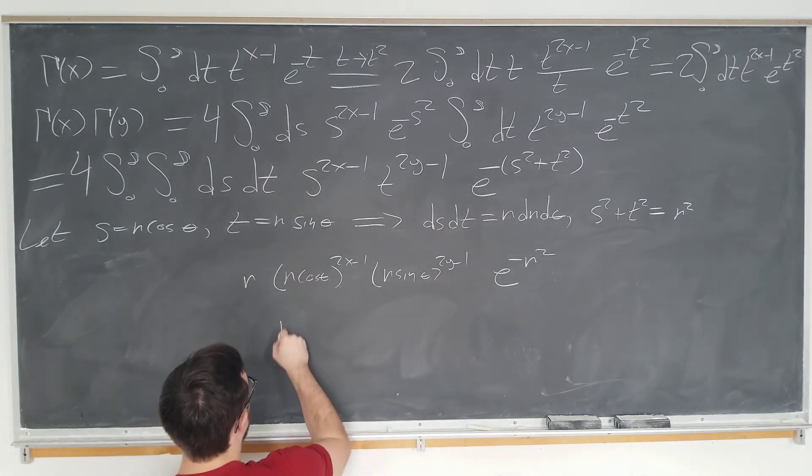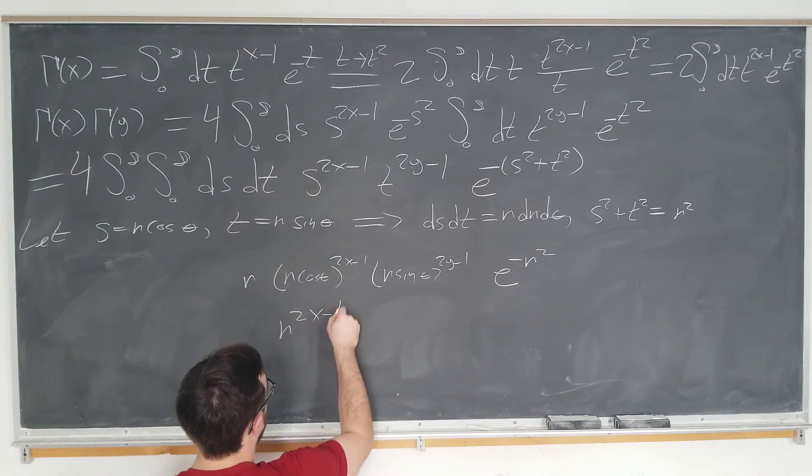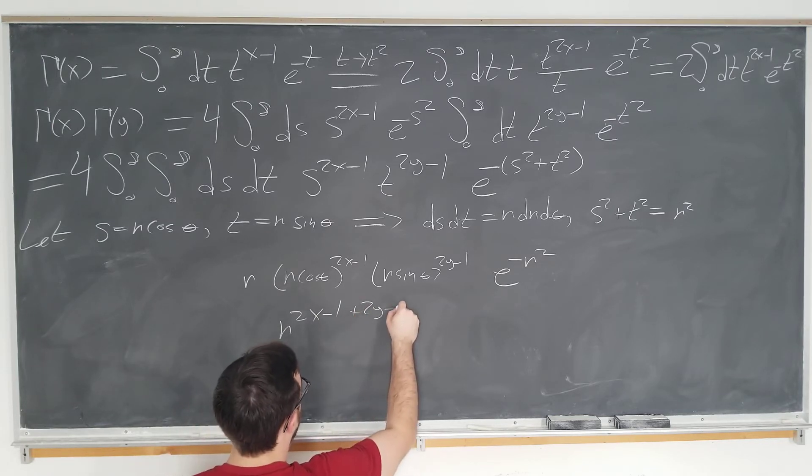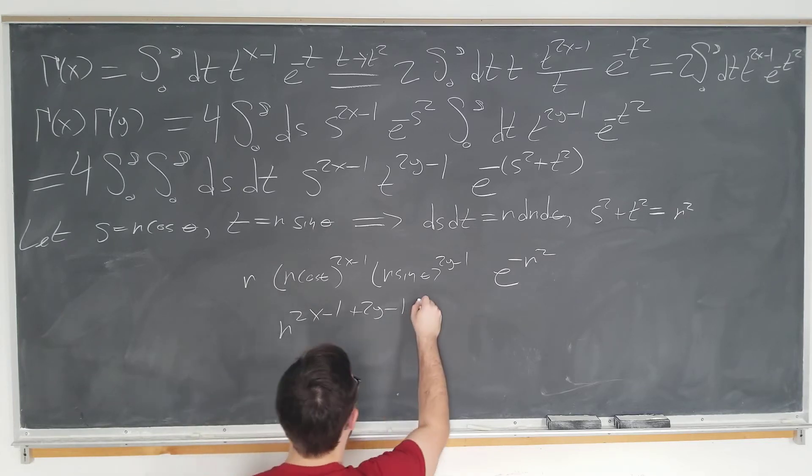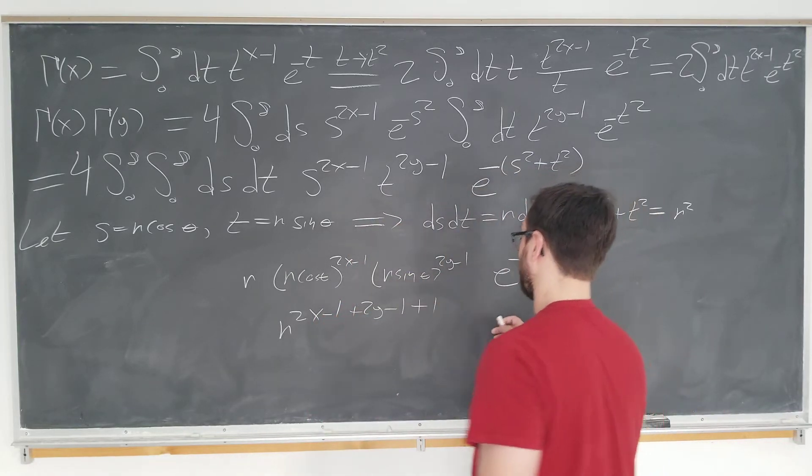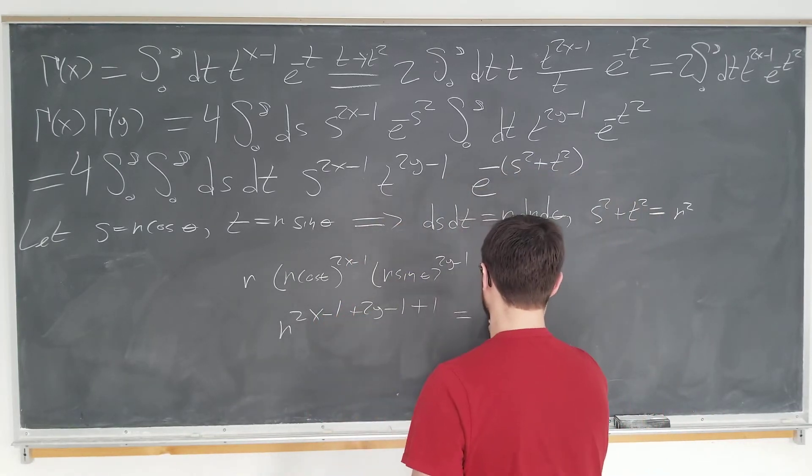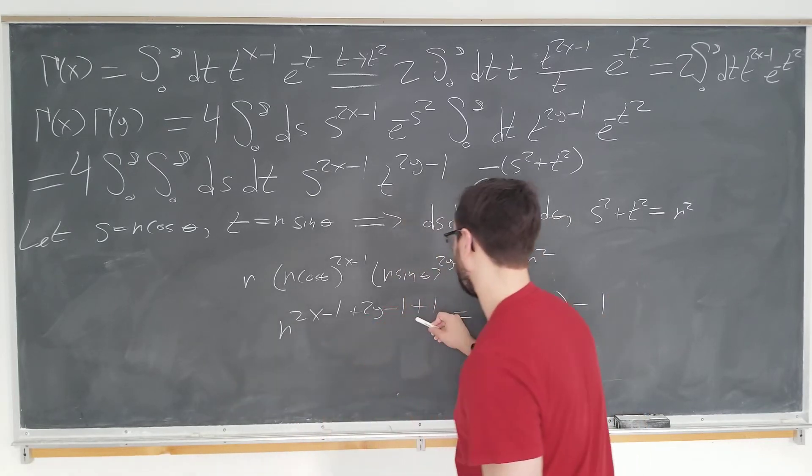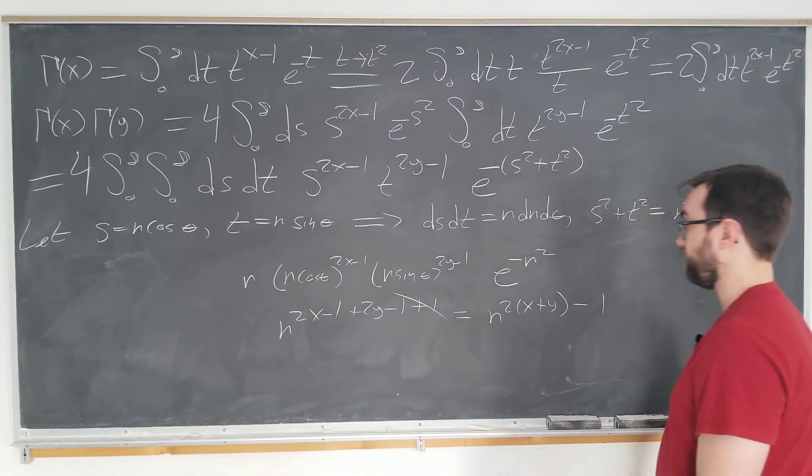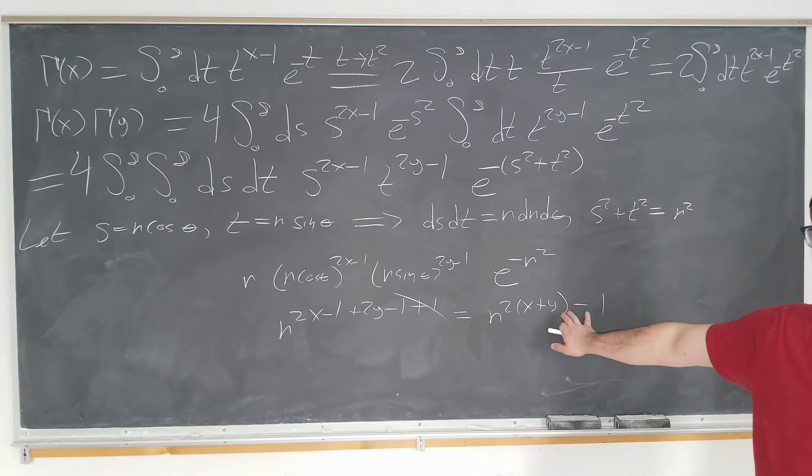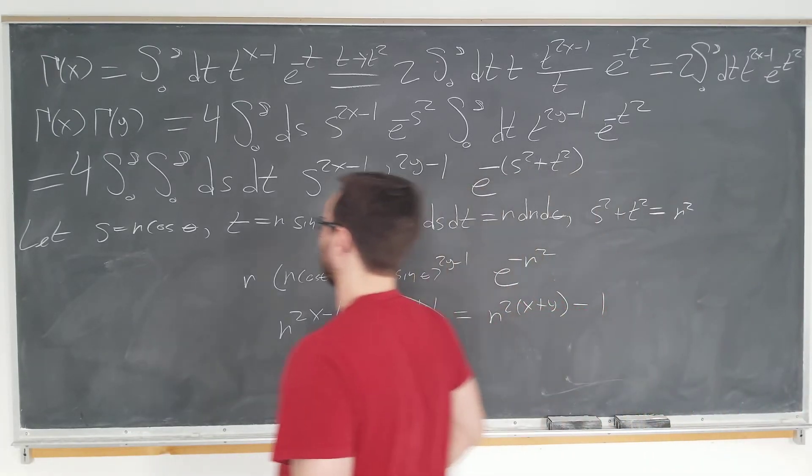Okay, now this becomes r to the 2x minus 1 plus 2y minus 1 plus 1 for this part. And the cosines and sines are obvious, and this is just equal to r to the 2x plus y minus 1, since, of course, these bad boys cancel. And now we can write down the whole integral, just keep this in your head, r to the 2x plus y minus 1 in your head for a bit.